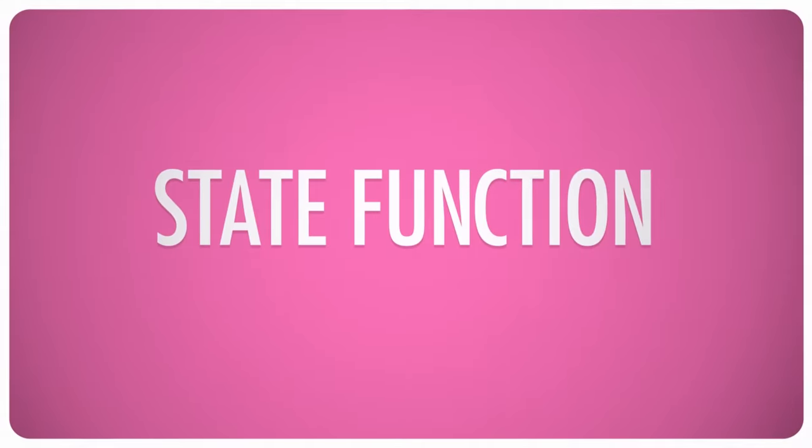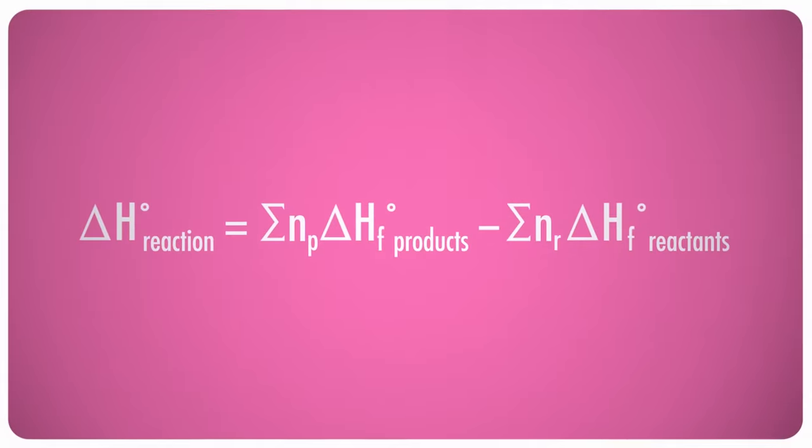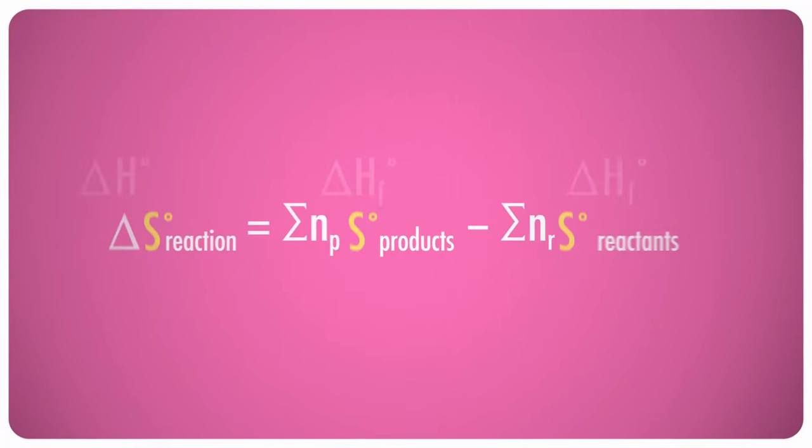Entropy is another state function. It doesn't depend on the pathway the system took to reach its current state. So even though we can't measure the entropy of reactants or products directly, we can calculate them. We can also calculate the change in entropy that occurs during a reaction exactly like we can for the change in enthalpy, by subtracting the sum of the reactant values from the sum of the product values. In other words, the formulas look exactly the same, just substituting S, which for some reason is used to denote entropy, for delta HF.